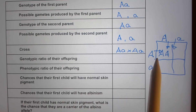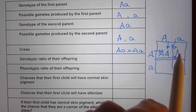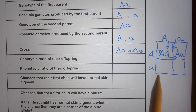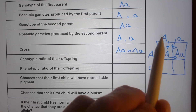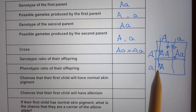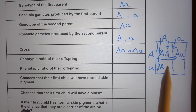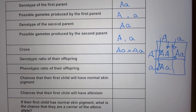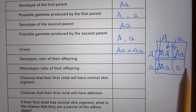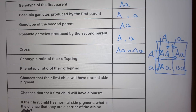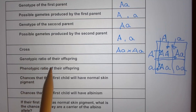We fill in the Punnett square: this gamete will form a zygote with that gamete — capital A comes down, lowercase a goes there. Note that the order of letters doesn't matter, but we usually write the capital letter first. From this we can read the genotypic ratio of their offspring.